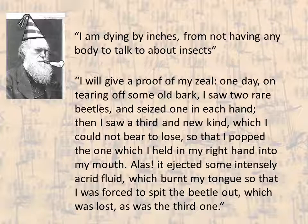Darwin was a very good all-round naturalist and studied lots of different groups of organisms later on. The question I'm going to answer is not one he directly addressed, but what he did do is give us the tools we need as evolutionary biologists to address why there are so many insect species. One of these tools, which I'll talk about in a later slide, is something called the evolutionary tree or the tree of life — a very important tool for addressing why some groups of organisms are diverse and others are not.